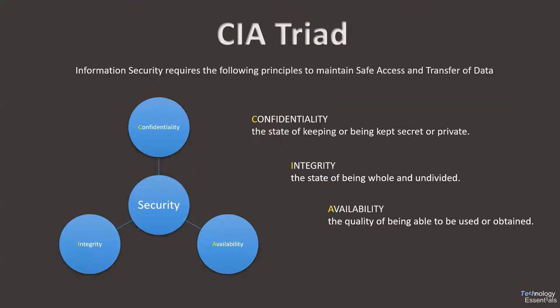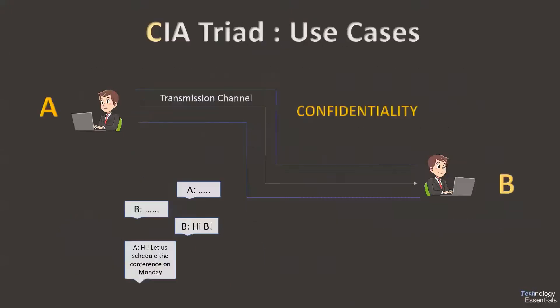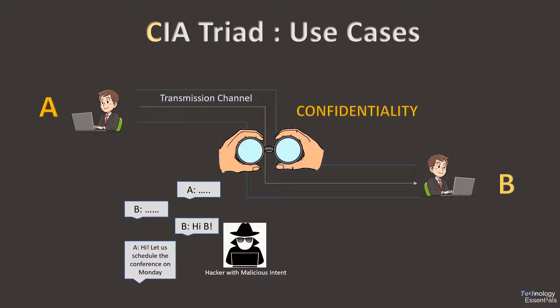Let us look at some use cases for each of these elements. Consider two friends A and B. They communicate through messages sent via the transmission channel. These messages can lose their confidentiality when a third party is able to read all their messages exchanged in the transmission channel. Hence confidentiality is lost, and both A and B remain unaware of this.